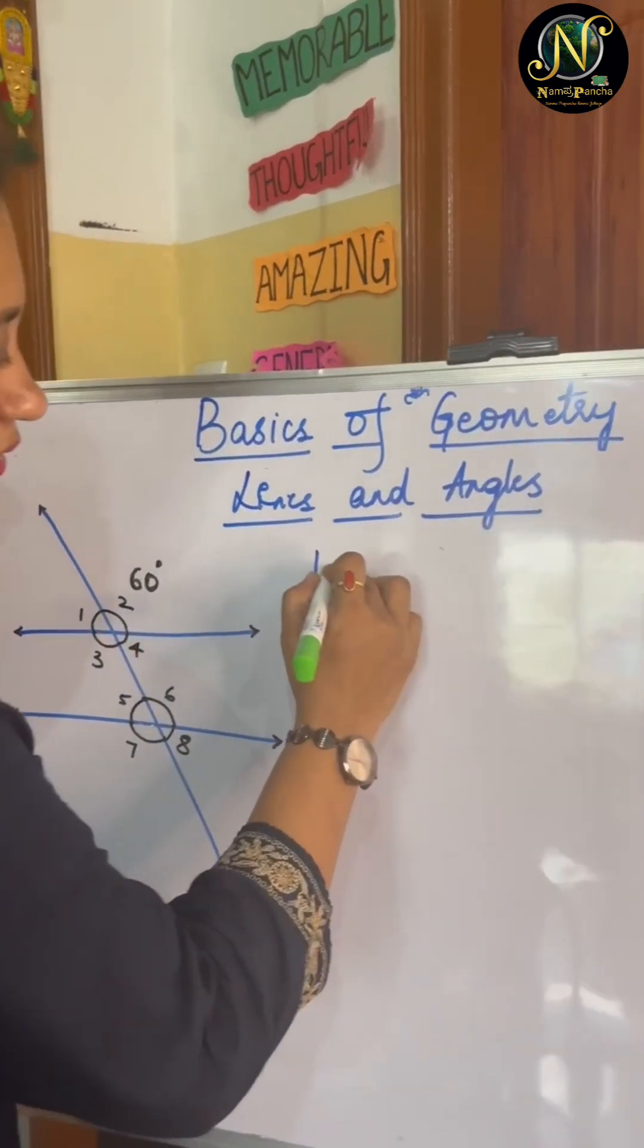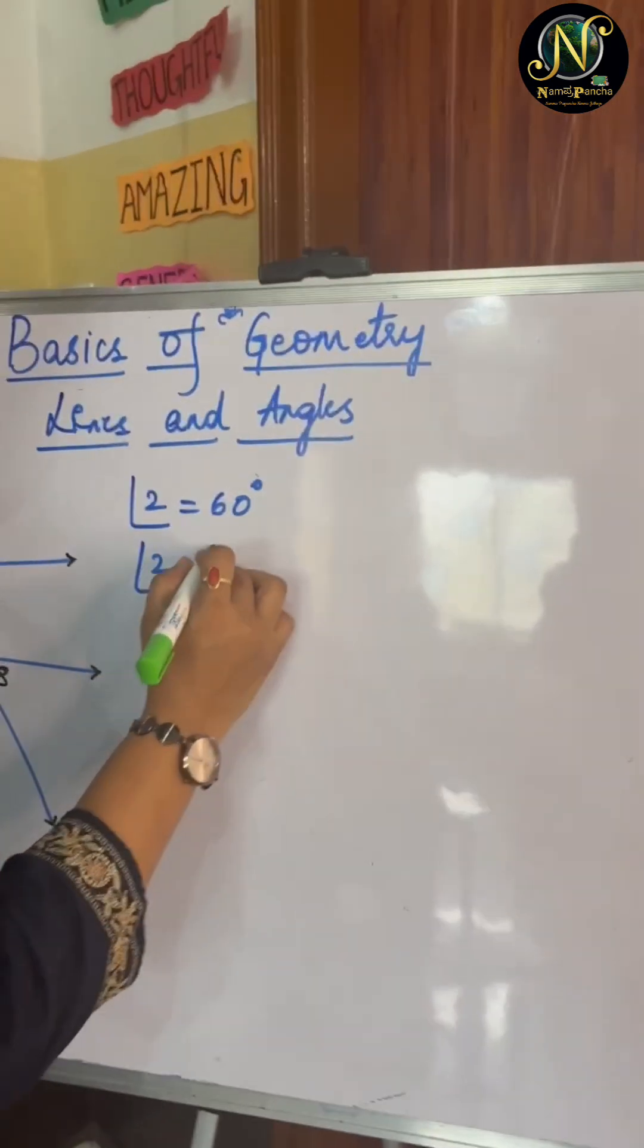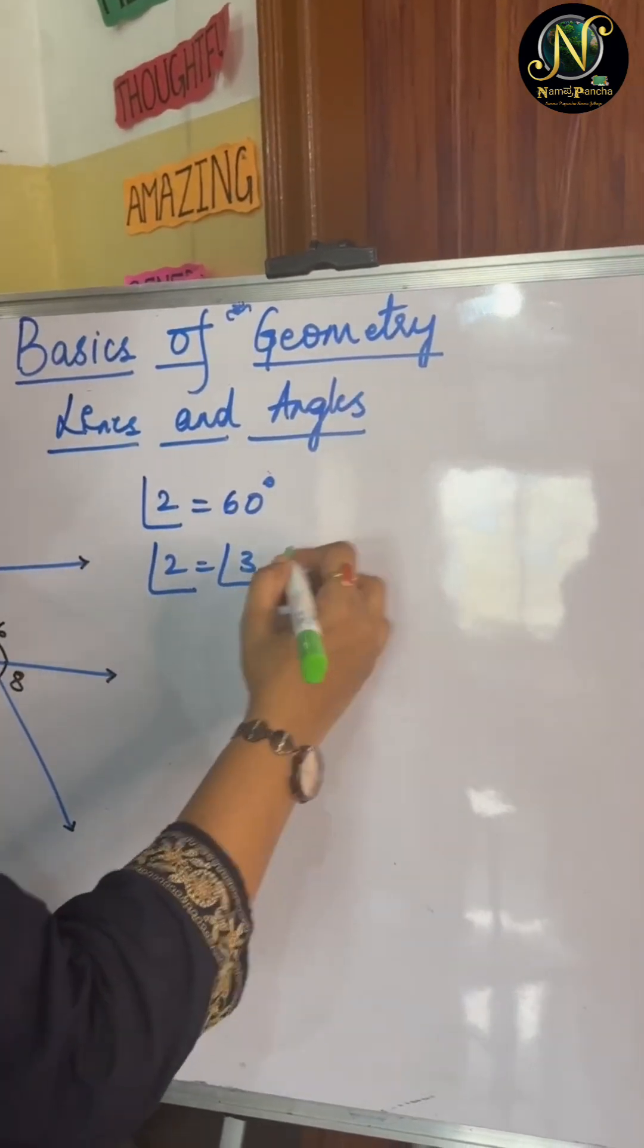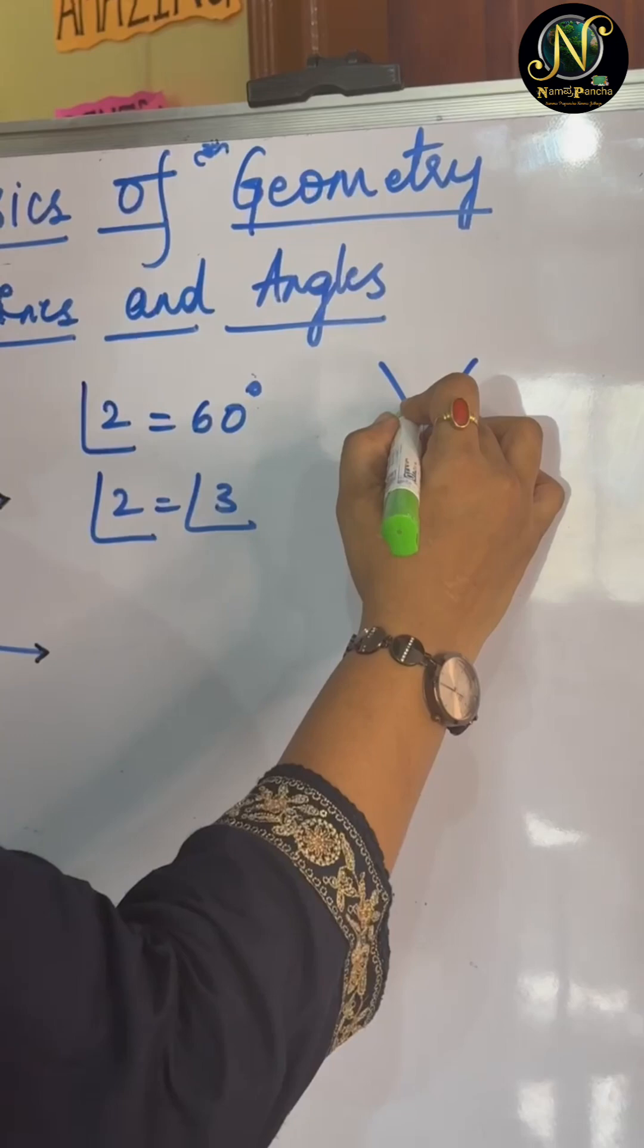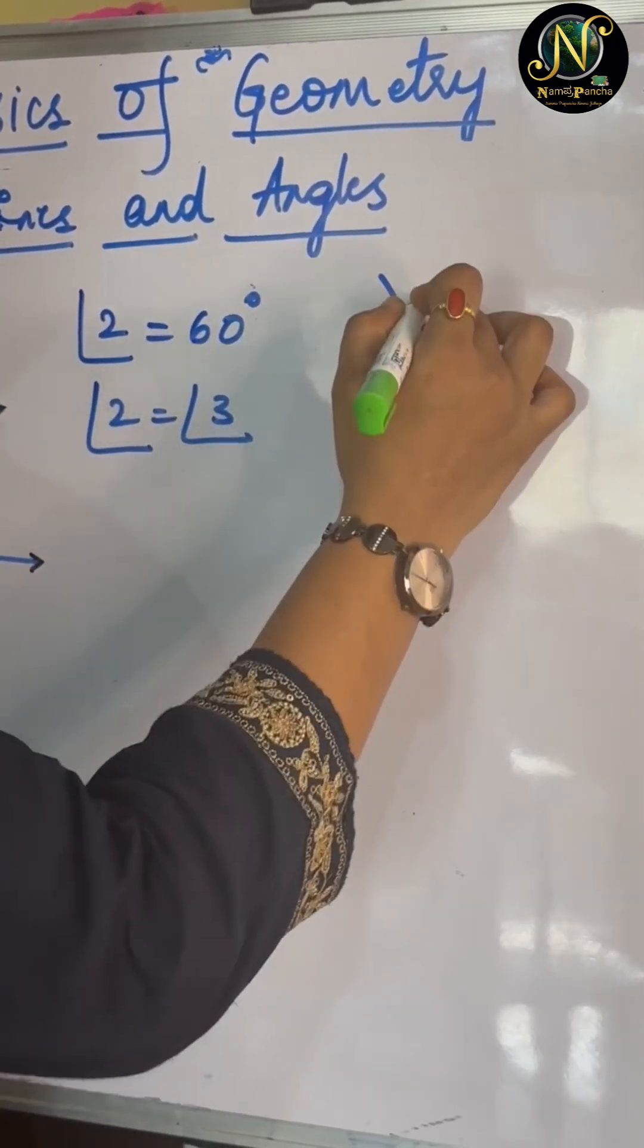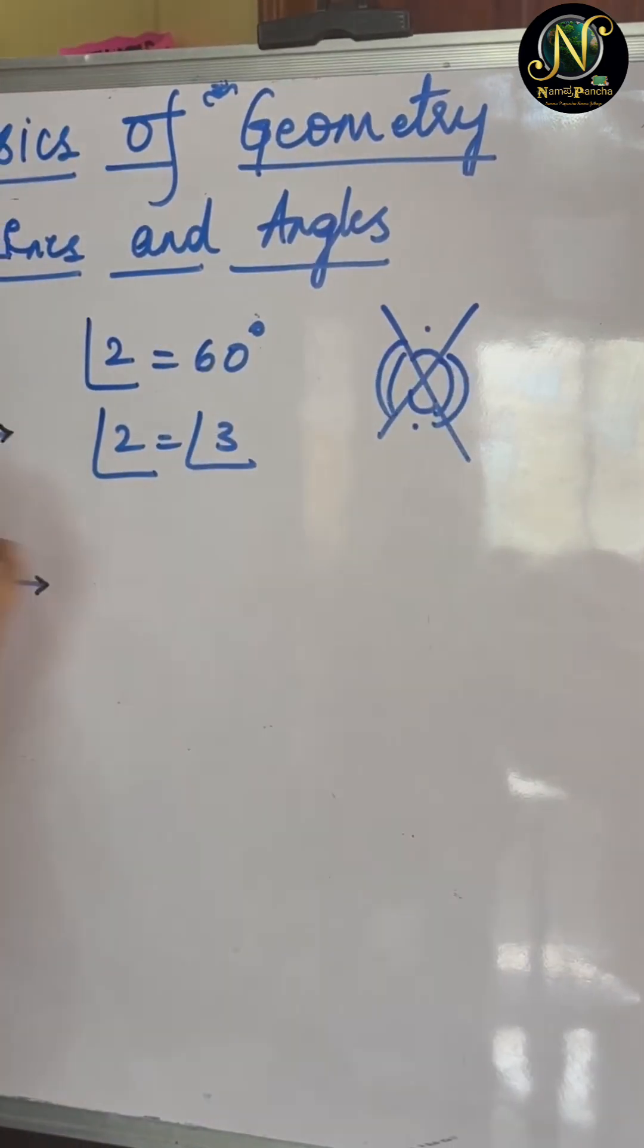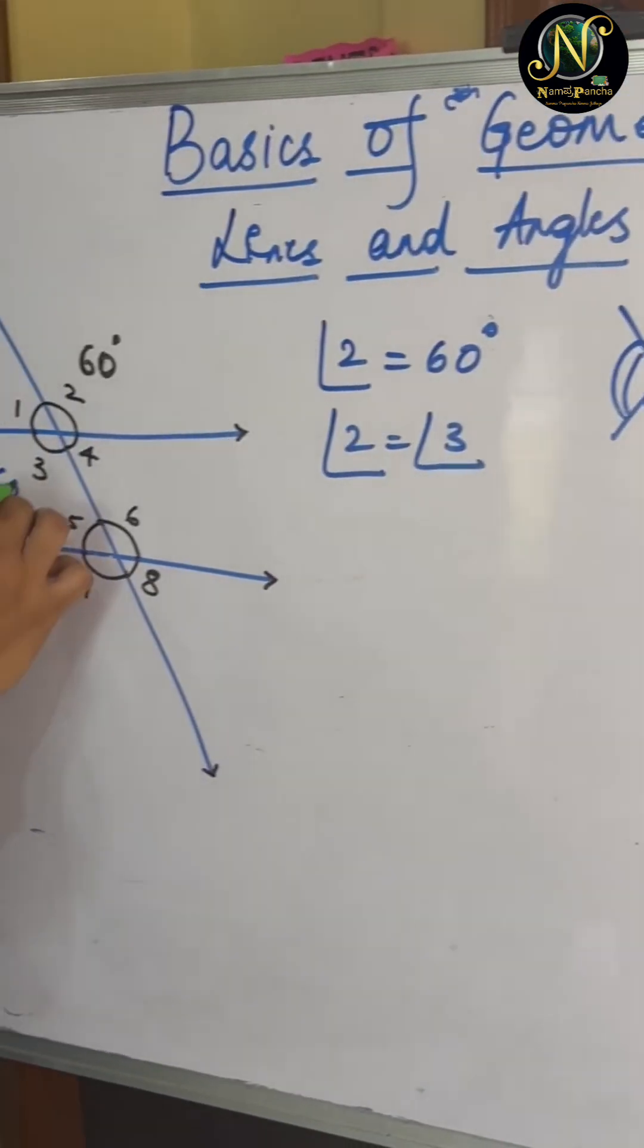In this figure, angle 2 is given to be 60 degrees. So angle 2 is equal to angle 3. What concept are we using here? Vertically opposite angles. When two lines intersect each other, the angles formed on the opposite sides are always equal. So based on that, 3 will be 60 degrees.